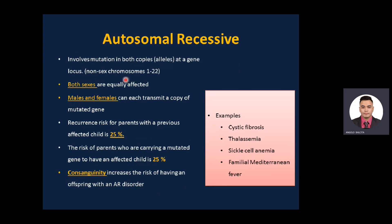Autosomal recessive involves mutation of both copies of alleles at the gene on autosomes (chromosomes 1–22). Both sexes are equally affected; males and females can each transmit a copy of the mutated gene. Recurrence risk for parents with a previous affected child is 25%. Consanguinity increases the risk of having an offspring with an autosomal recessive disorder. Examples: cystic fibrosis, thalassemia, sickle cell anemia, and familial Mediterranean fever.